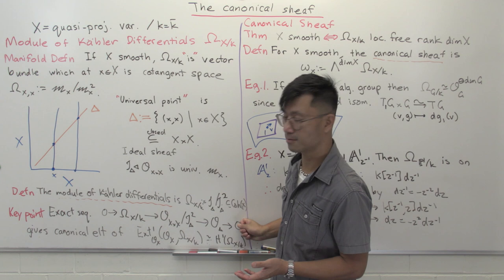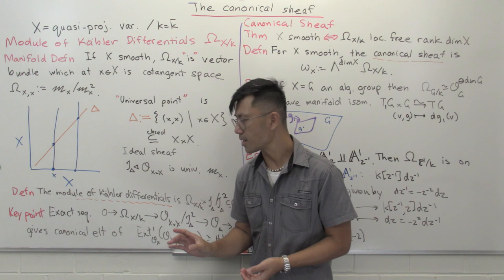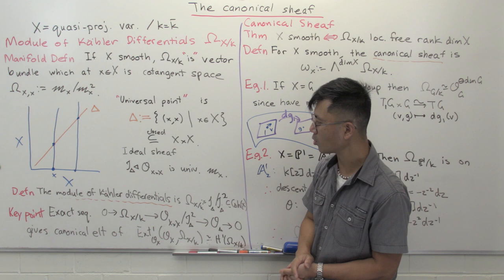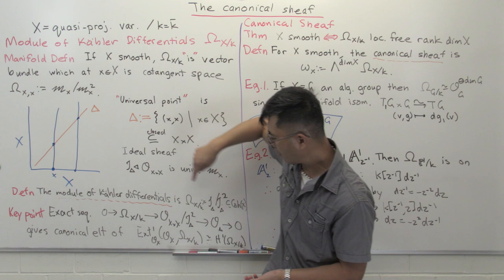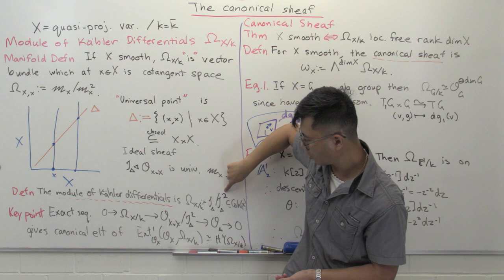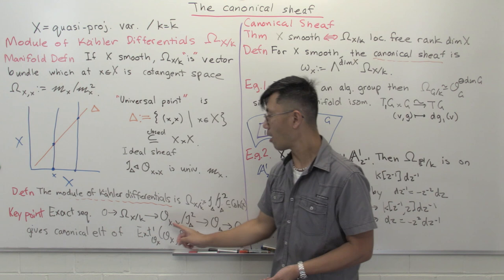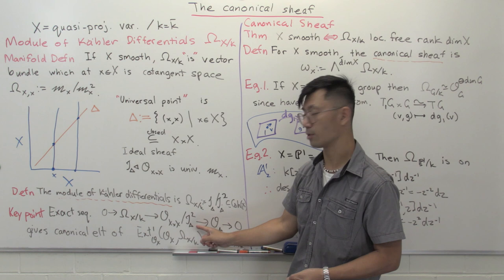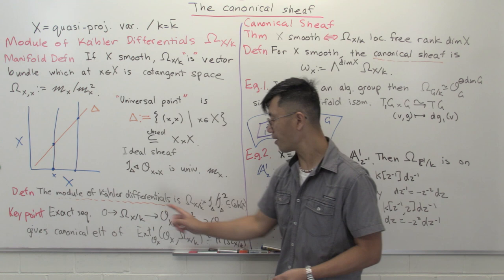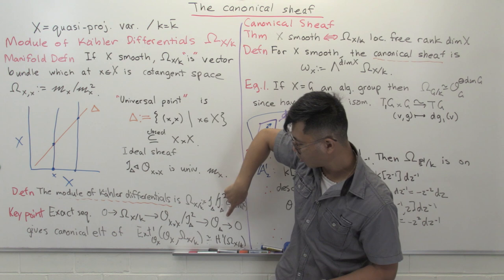What's really nice coming out of this definition is the following. You have O, you have I_delta, and you have I_delta squared. Looking at O all the way down to O mod I_delta squared, inside here is the ideal I_delta over I_delta squared, which is basically omega X over k. And if you quotient by that you get O mod I_delta, which is O_delta.